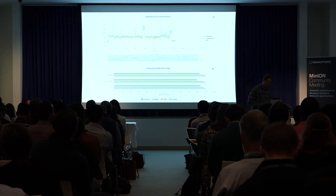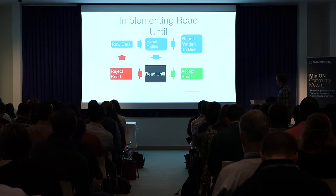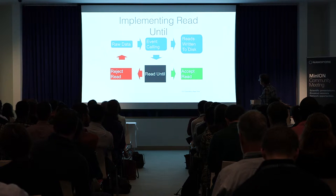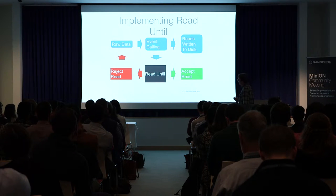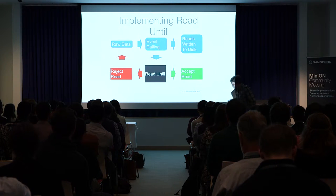But this is all doing it after the sequencer. What we really want to do is do it on board the sequencer. So we've had a go at implementing this using the NanoPore API. Essentially, the raw data gets event-called, and then you can look at that and decide whether to accept the read — in which case it's written to disk — or reject the read, in which case the read will actually be spat back out of the pore.